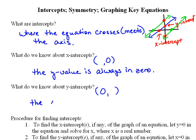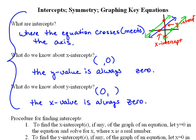So, the x value is always 0. I don't know why I put always n-0, it's always 0. That's what we already know about intercepts.